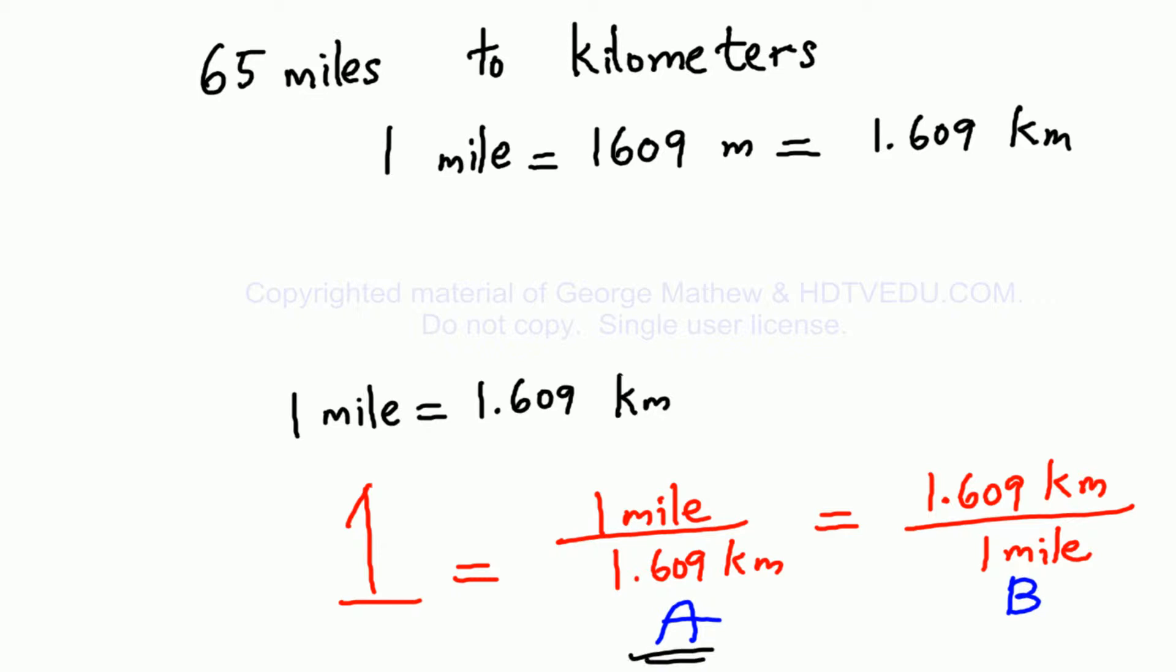A or B? One mile divided by one mile is one. How about replace one mile with 1.609 kilometers? So one mile divided by 1.609 kilometers is also one, equivalent to one. Or you can replace the mile at the top with kilometers, so 1.609 kilometers over one mile.